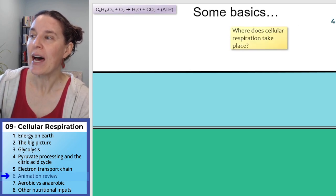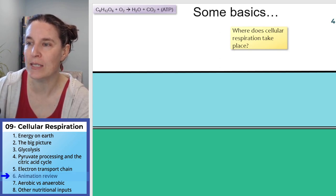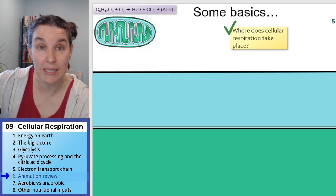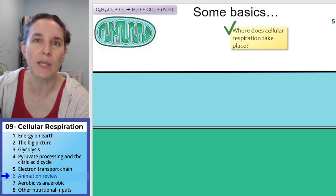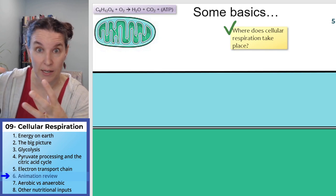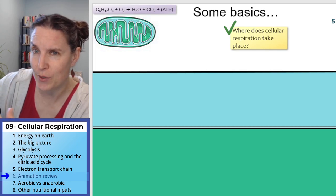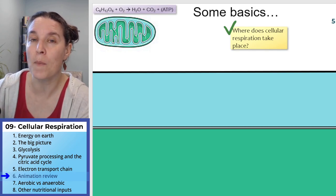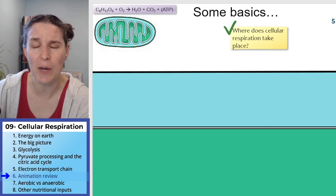Where does cellular respiration take place? This is a tricky one because we should have multiple answers. Some of the processes take place in the cytoplasm of the cell, and a lot of them take place in the mitochondria. What you see here is a piece of the mitochondria that I've color-coded, and we're going to be talking about mitochondria.